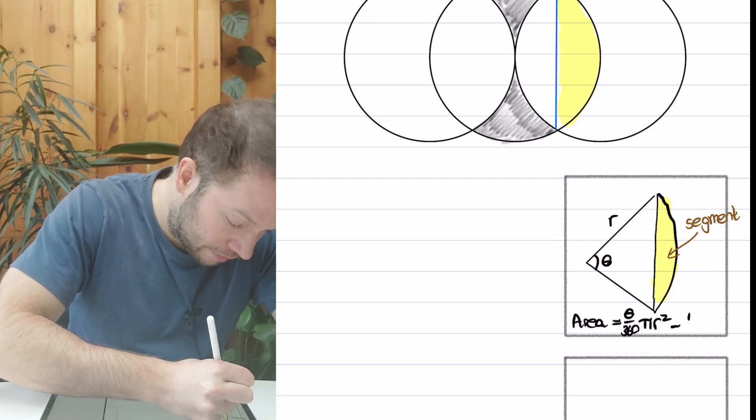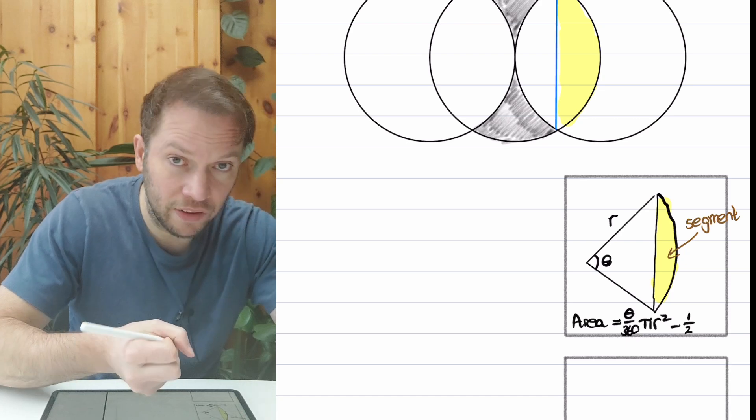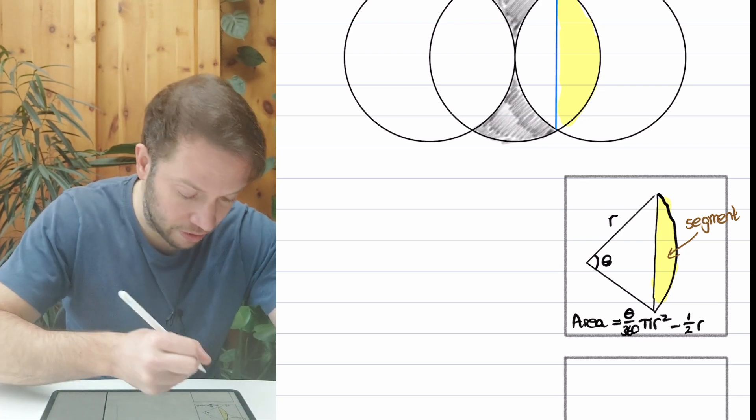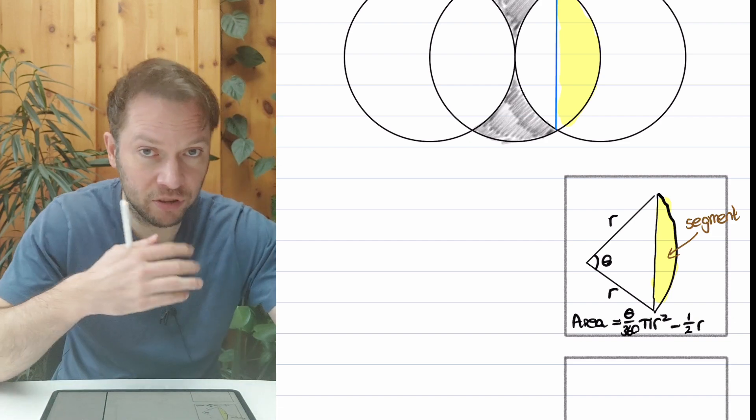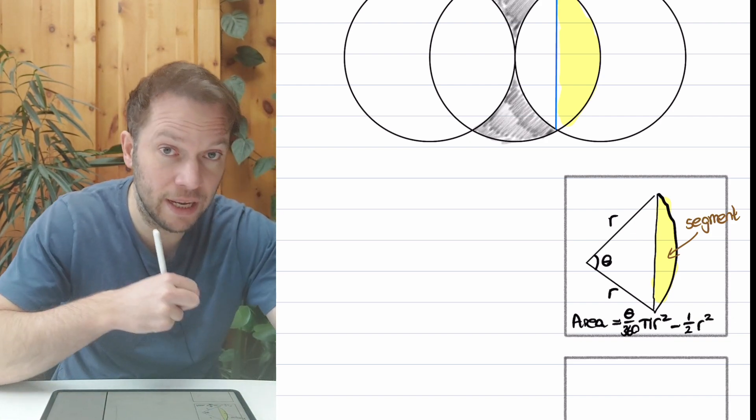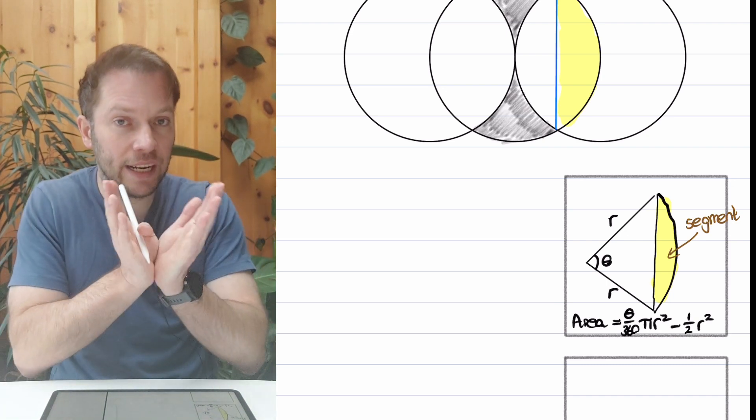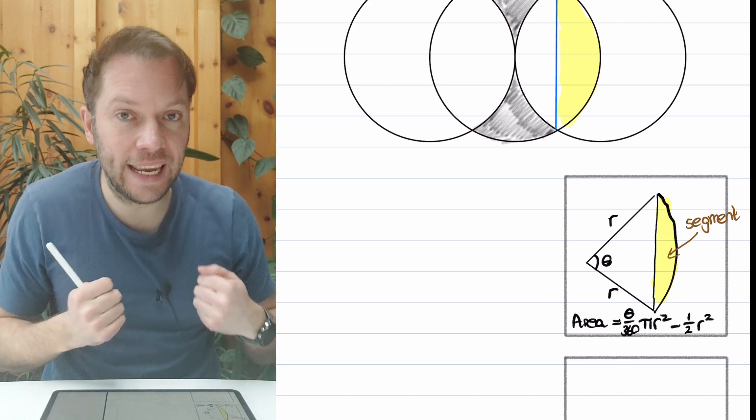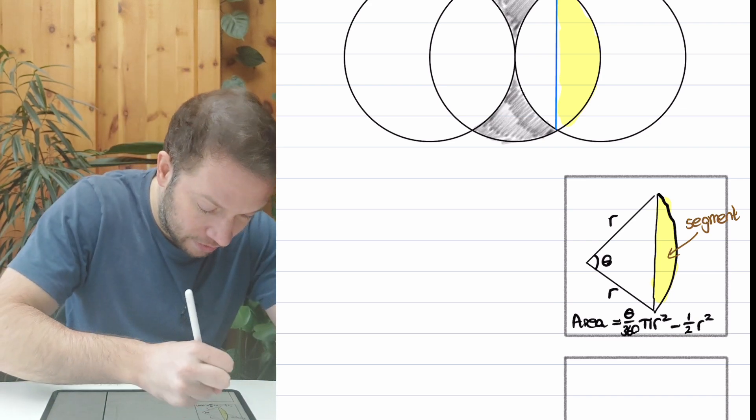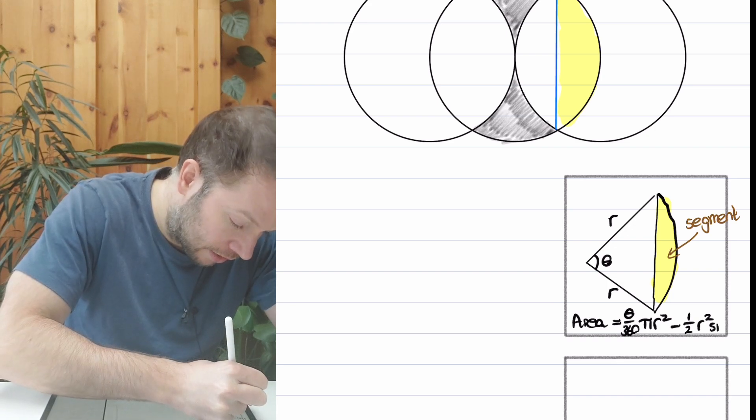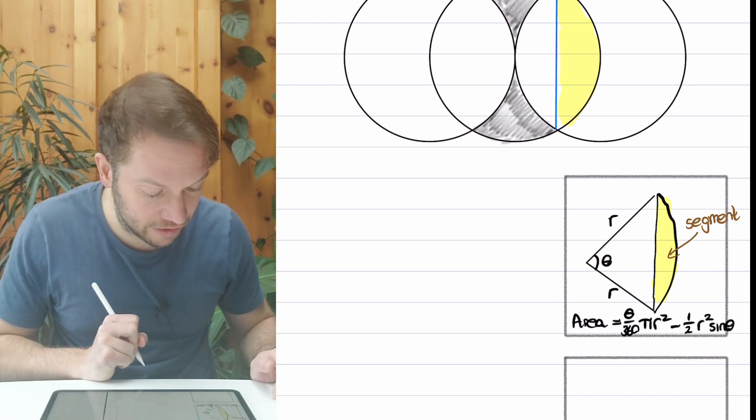So what you do is you do half times the length of one of the sides of that triangle—well, r—times the length of another side of that triangle. This would also be r at the bottom because it's also the radius of that sector. So r times r is r². And then we times by the sine of the angle between those two sides—we call that the included angle. So θ is the angle between those two r's, so we do sine of θ. So that is the area of a segment.